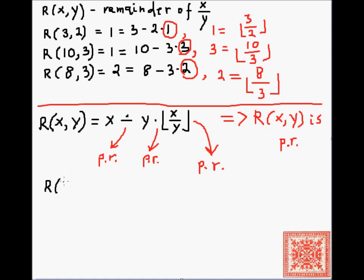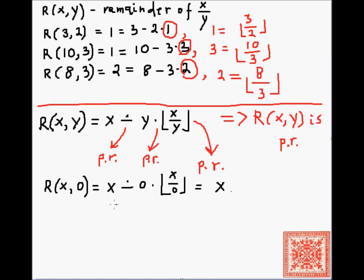By definition, the remainder of x and 0 is equal to x dot-minus 0 times the floor of x over 0, which is equal to x dot-minus 0, which equals x.